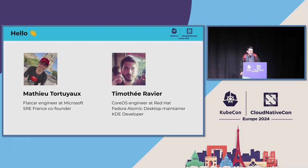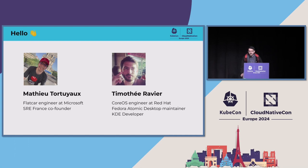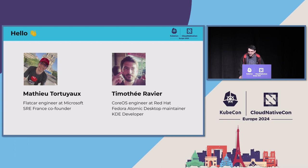I'm a CoreOS engineer at Red Hat. I work on Fedora CoreOS and Red Hat CoreOS mainly. On the side, in the community, I work a lot in the Fedora community, especially on the Fedora Atomic desktops. We just went through rebranding — we used to call them Fedora Silverblue, Fedora Kinoite, and all those variants. Now we call them all the Fedora Atomic desktops. I also do some work on the KDE side, working on Discover and other applications.